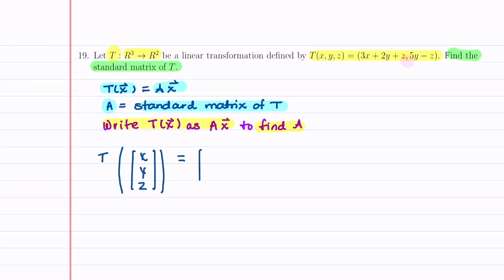So we'll write our vector like this, and our first component is going to be 3X plus 2Y plus Z. The commas just separate each component, and then the second one is going to be 5Y minus Z.